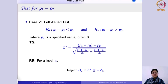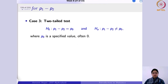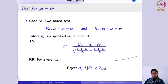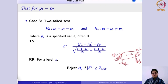The proportion tests align with the mean tests because the normal distribution applies in both cases. When σ is unknown for means, you use the t-distribution; otherwise the standard normal. For the two-tailed proportion test, the alternative is that p1 minus p2 is not equal to p0. The test statistic is the same, and you reject the null if z* is less than −zα/2 or greater than zα/2, where each tail has area α/2 and the middle region has area 1−α.